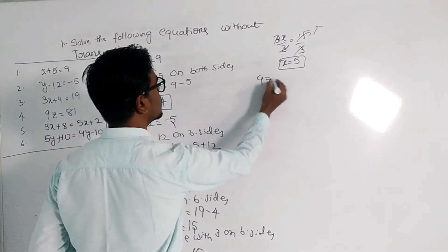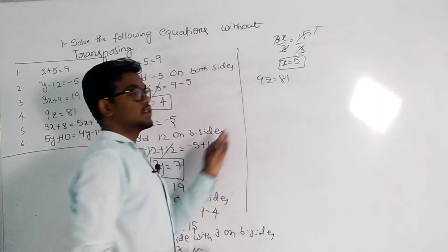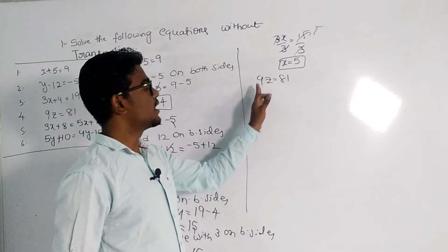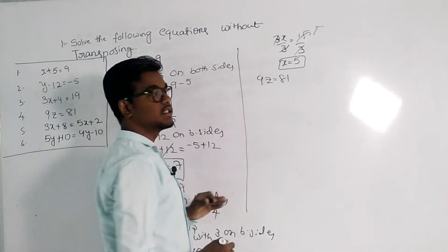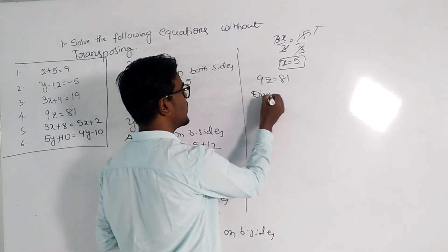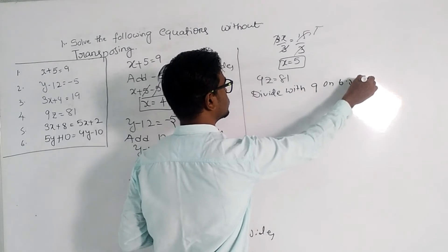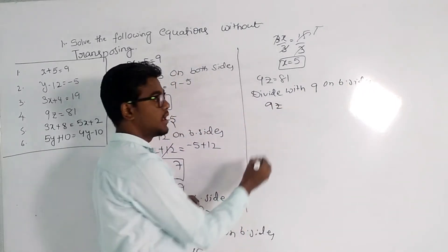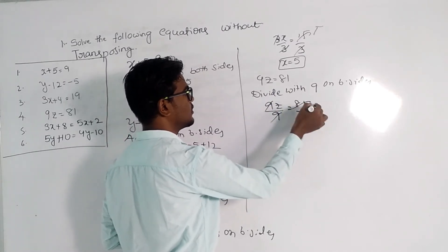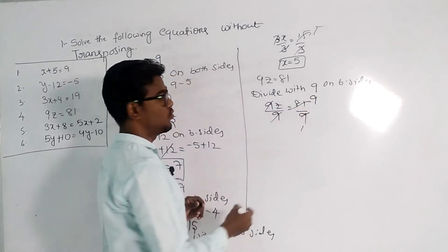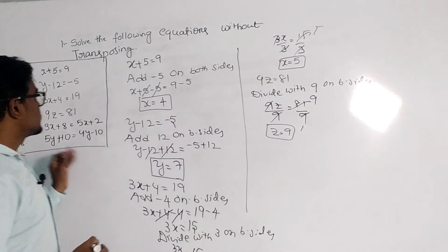The next equation is 9z equals 81. Here 9 is multiplied with z and equals 81. So we divide both sides by 9. 9z divided by 9 equals 81 divided by 9. The 9s cancel and z equals 9.